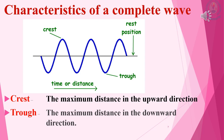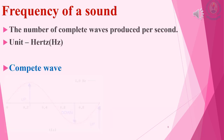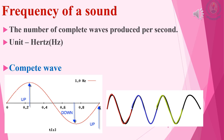What is a crest and a trough? The crest is the highest point of a wave, and the trough is the lowest point of a wave. What do we mean by the frequency of a sound? The frequency is the number of complete waves produced per second, and the unit of frequency is hertz.